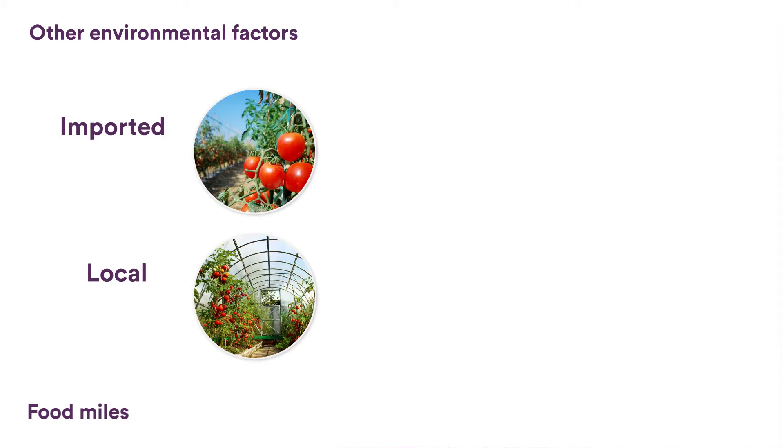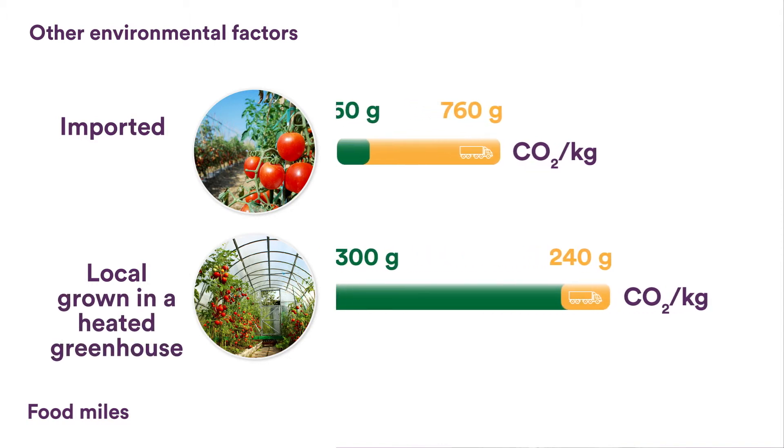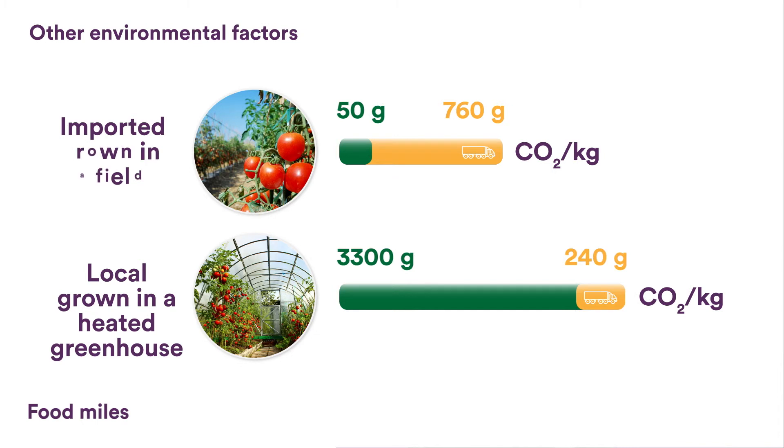If we take the example of tomatoes again, growing them in heated greenhouses, as is the case in the Netherlands or off-season in Switzerland, can greatly increase energy consumption and CO2 emissions. Thus, tomatoes produced locally but under heated greenhouses have a much higher environmental impact than imported tomatoes produced at natural ambient temperatures.